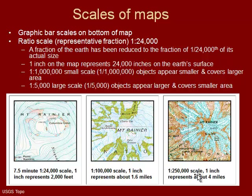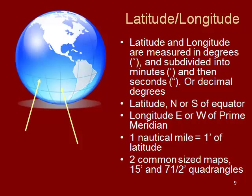For example, one inch equals 2,000 feet. That's derived by noting one inch equals 24,000 inches, and since there are 12 inches in a foot, dividing 24,000 by 12 gives you 2,000 feet. The same conversion can be done into miles. So that's the scale of the map.